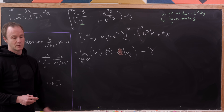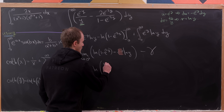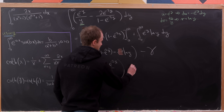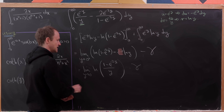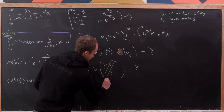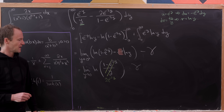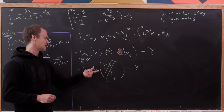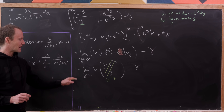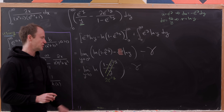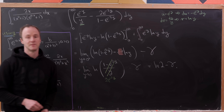Applying L'Hôpital's rule to the limit of (1 − e^{−2y})/y as y→0 gives 2e^{−2y}/1 → 2. Since log is continuous we bring the limit inside, getting ln(2). Combined with −γ from the IBP integral, the final answer is ln(2) − γ.